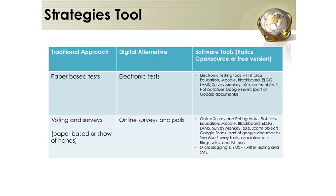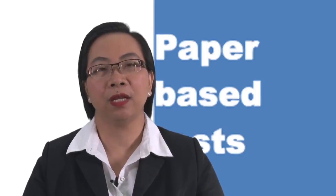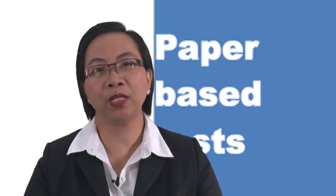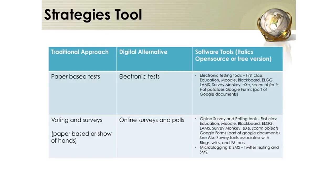If the activity is about paper-based tests, the digital alternative is having electronic tests, which are now very common. Tools include Blackboard, Moodle, FirstClass Education, LAMS, SurveyMonkey, Hot Potatoes, dot EXE, SCORM objects, and others. If the activity is about voting and surveys, the traditional method is paper-based or a show of hands. Digital tools include online survey and polling tools such as FirstClass Education, Moodle, SurveyMonkey, dot EXE, SCORM objects, Google Forms, and survey tools associated with blogs, wikis, and IM tools.